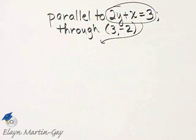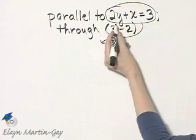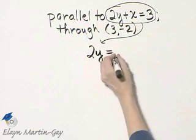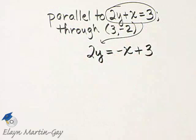There are many ways, but we'll find the slope by solving this equation for y. So to solve this equation for y, I'll begin by subtracting x from both sides. If I subtract x on the left side, I have 2y. If I subtract x on the right side, I'll have negative x plus 3.